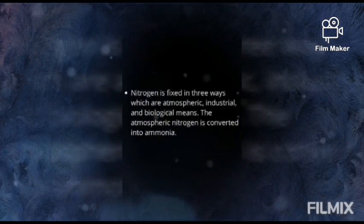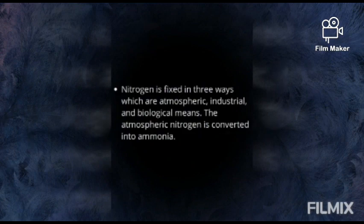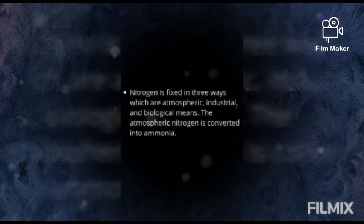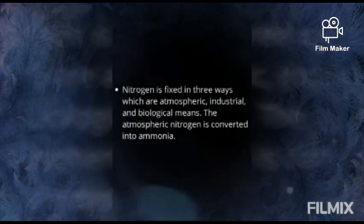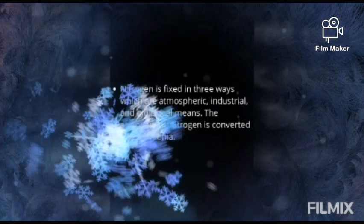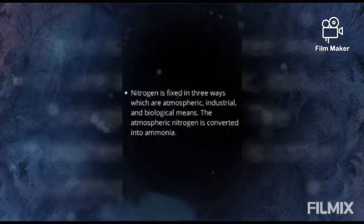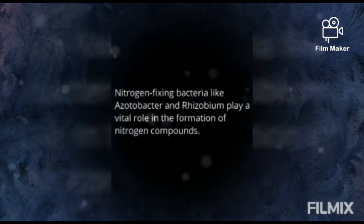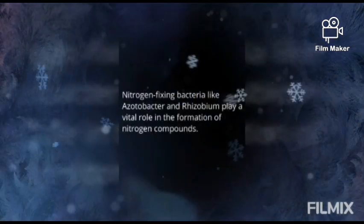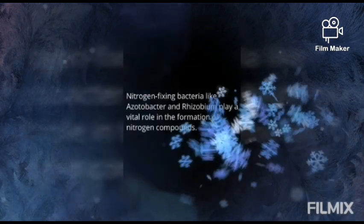Nitrogen is fixed in three ways: atmospheric, industrial, and biological means. The atmospheric nitrogen is converted into ammonia. Nitrogen-fixing bacteria like Acetobacter and Rhizobium play a vital role in the formation of nitrogen compounds.